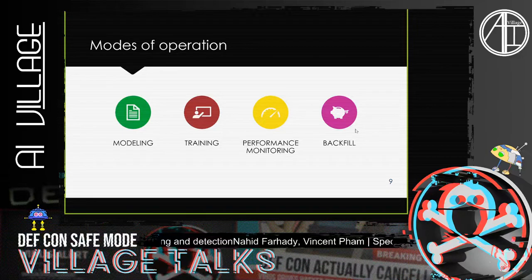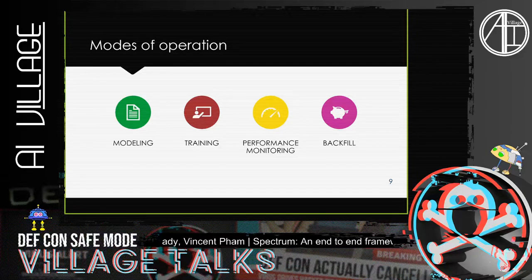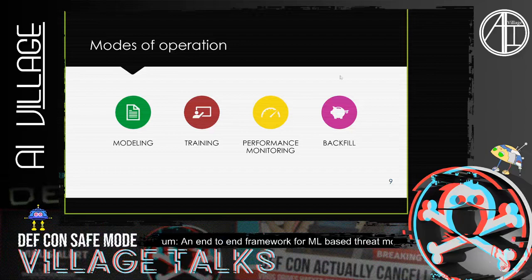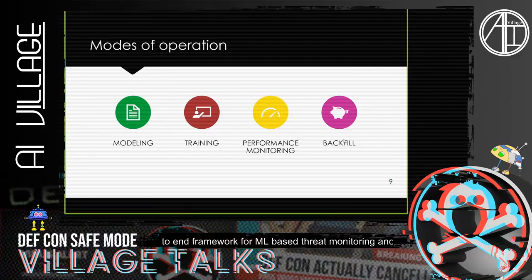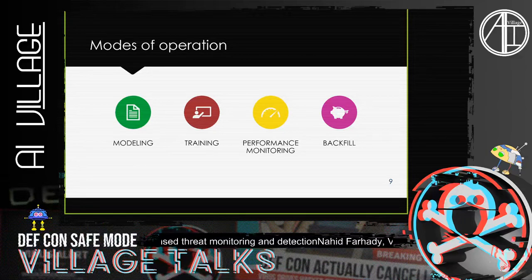If we generate alerts from performance monitoring, we go back to training to fine-tune our models. We also have a backfill mode, which handles situations in production where sensors fail or data sources become unavailable. In backfill mode, we run the same modeling but over a longer time period to ensure we haven't missed any events due to production problems.